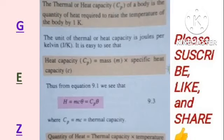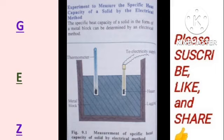The quantity of heat is equal to the thermal capacity times the temperature rise which that body has been subjected to. Now let's talk about a particular experiment used to measure the specific heat capacity of a solid by the electrical method. This electrical method involves boring two holes in a metal block whose specific heat capacity we are looking for.